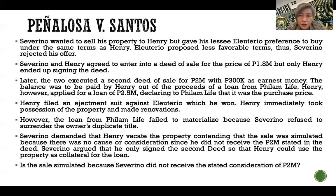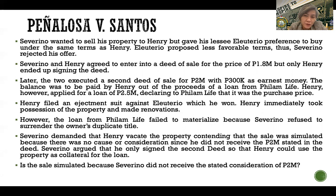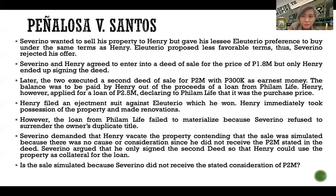So the seller Severino refused to surrender the title to the property and demanded that Henry vacate. Severino's ground to remove Henry was that the sale between them was simulated because there was no consideration — he did not receive the $2 million stated in the deed of sale. The seller claimed he only signed the second deed of sale so that Henry could use the property as collateral for the loan. The main issue is: was there a simulation of contract because the price stated in the deed was not actually received by Severino?